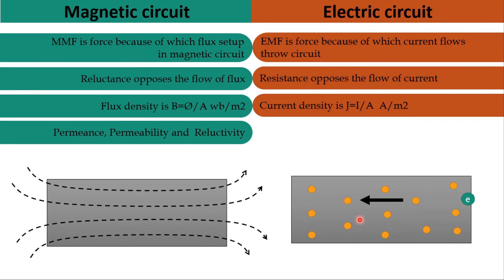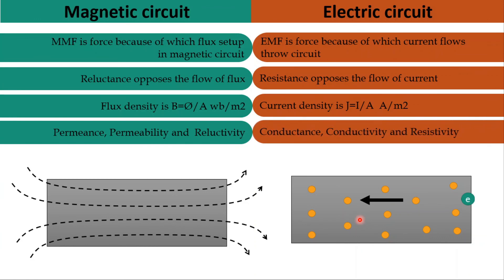Permeance, permeability, and reluctivity are the terms used in a magnetic circuit. The similar terms in an electrical circuit are conductance, conductivity, and resistivity. There is a separate video explaining all these terms in detail, and the link is in the description below.